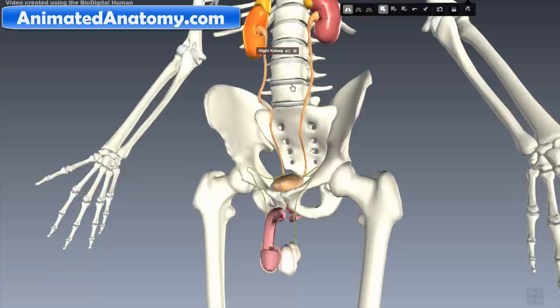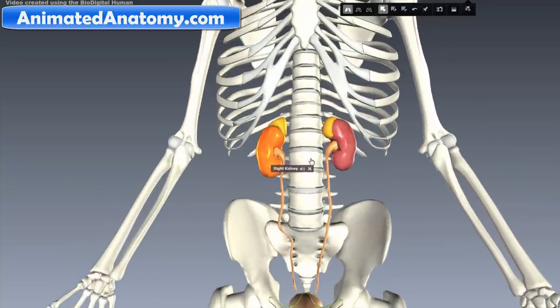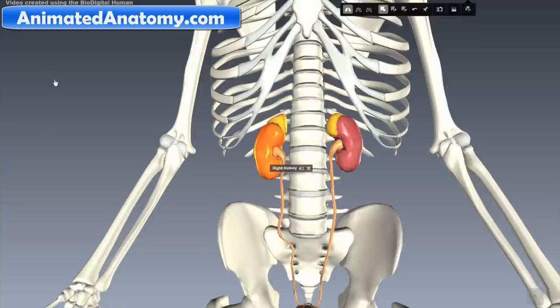Now let's go to the main organs I would say in this system and those are the kidneys. The kidneys in humans are located in the abdominal cavity on each side of the spine.